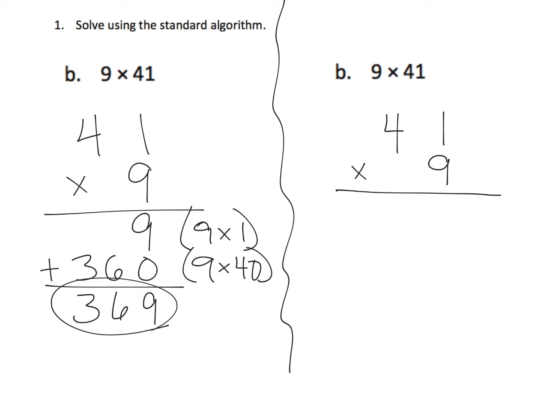Anyway, so 9 times 1 is 9, and then 9 times 4 tens is 36, so that's going to be 36 tens, so that's 360. So we're going to write 360, and there's our answer. So right here, this is a really nice example showing how much less work the standard algorithm is compared to the partial products method.